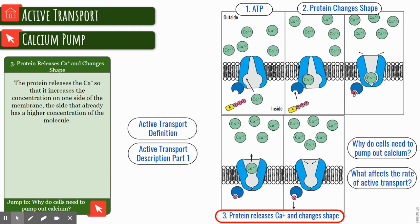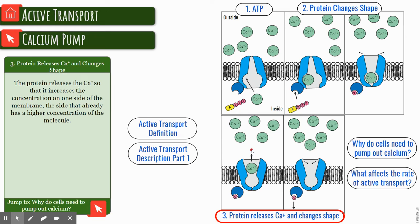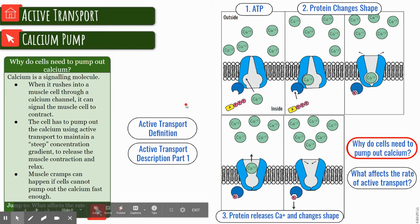The phosphate has been removed and this changes the shape of the protein. Then we see that the protein has now released the calcium onto that side, and once it has left, the shape will change back.